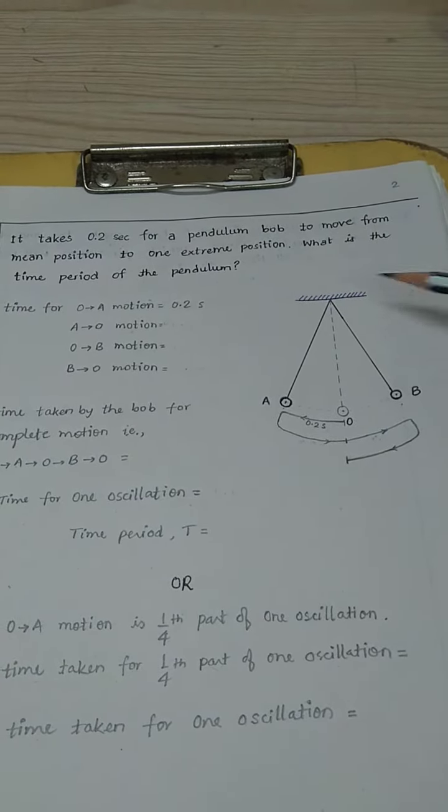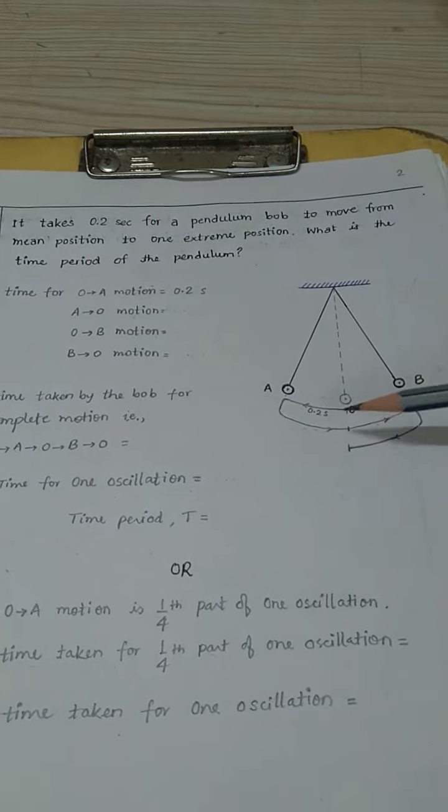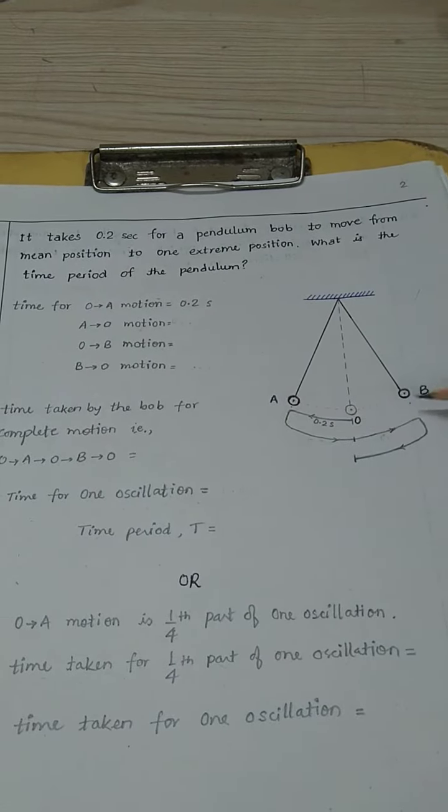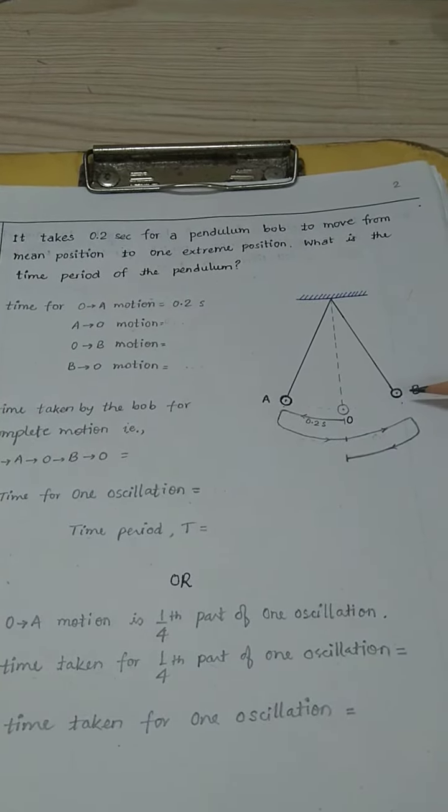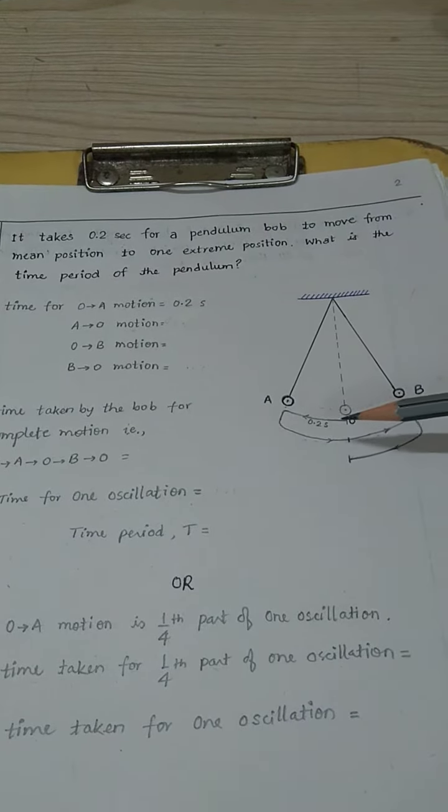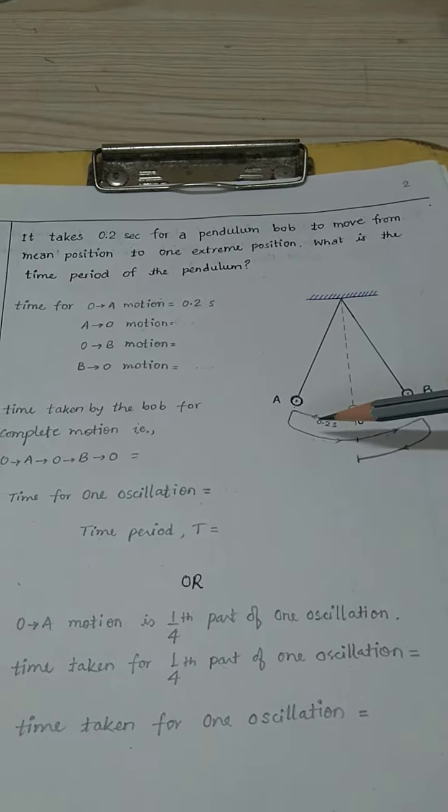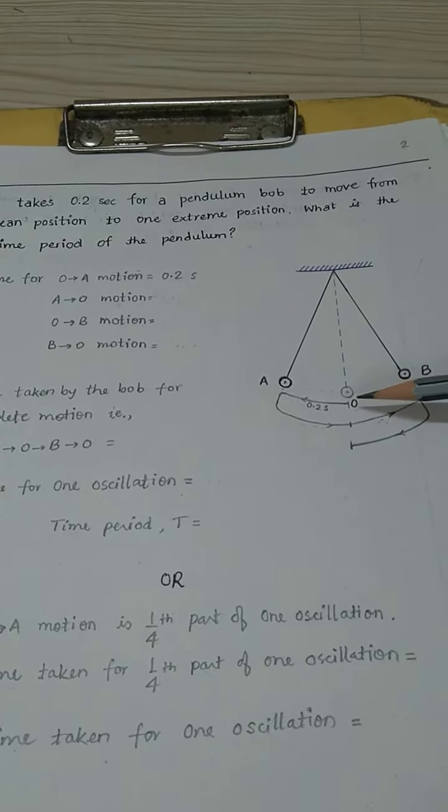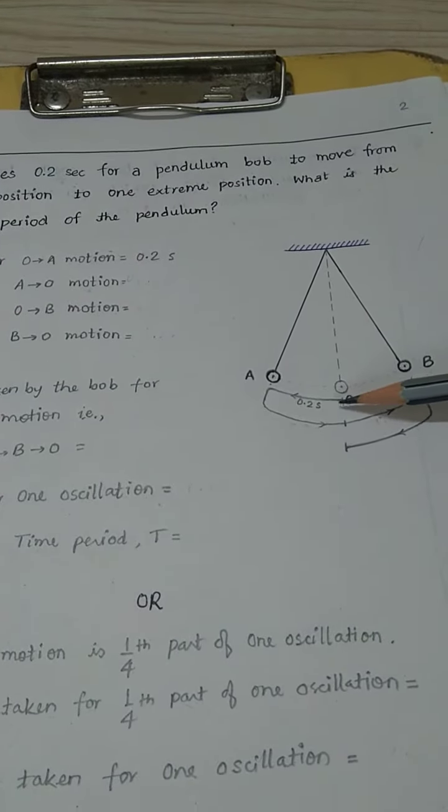So a pendulum is oscillating and A and B are extreme points, and it is given that the pendulum takes 0.2 seconds to move from O to A.